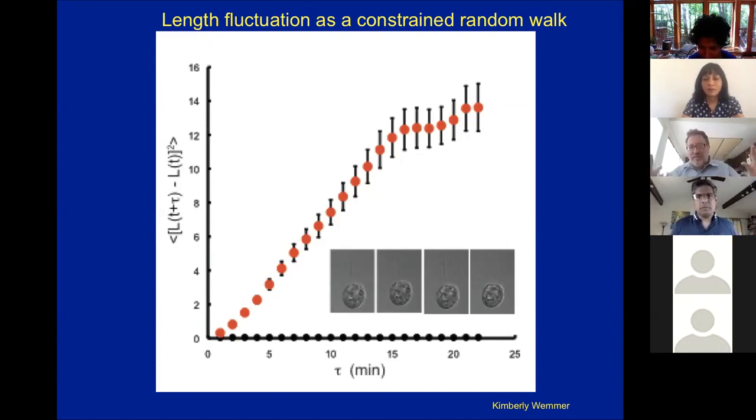So one thing that I do lose a little sleep over is could some of our apparent increase in variation in long flagella mutants simply be because of effects like that, where it's harder to accurately measure the lengths of those long flagella.